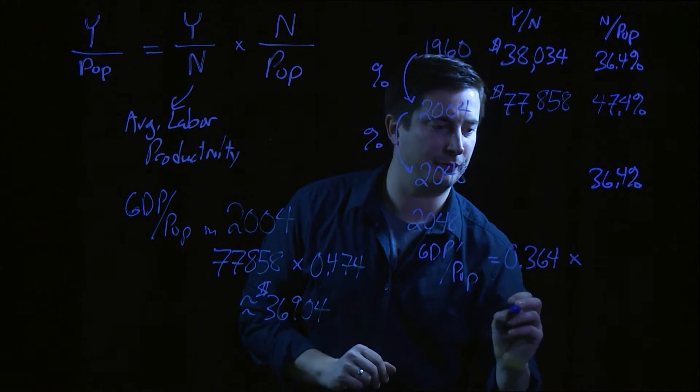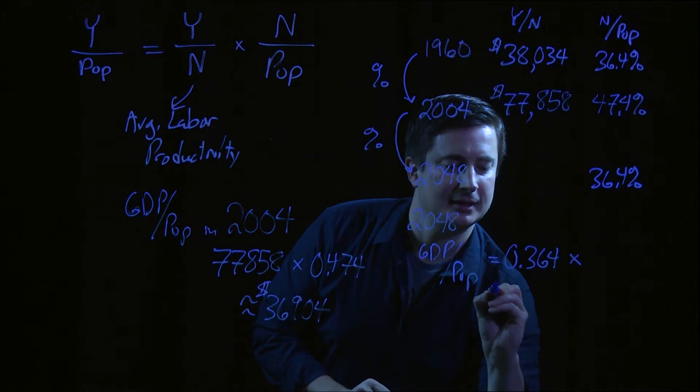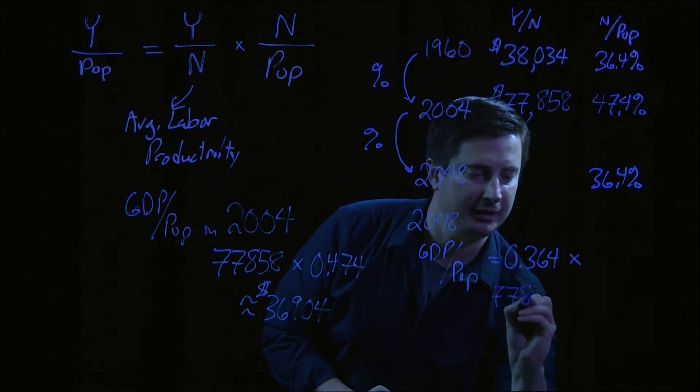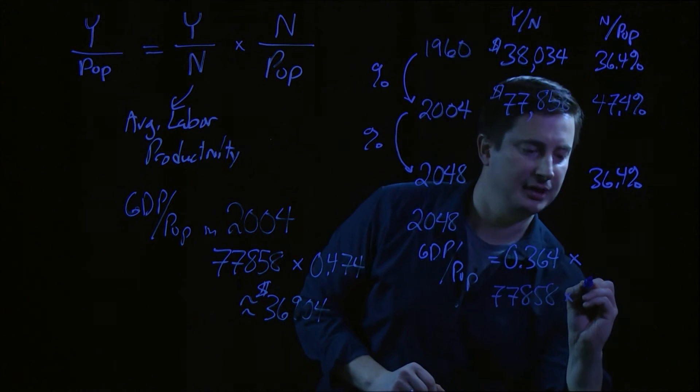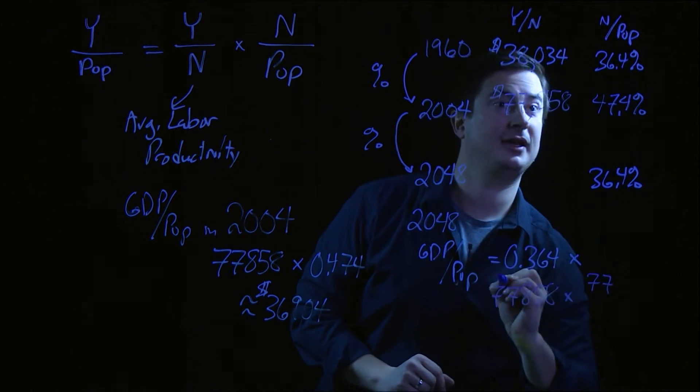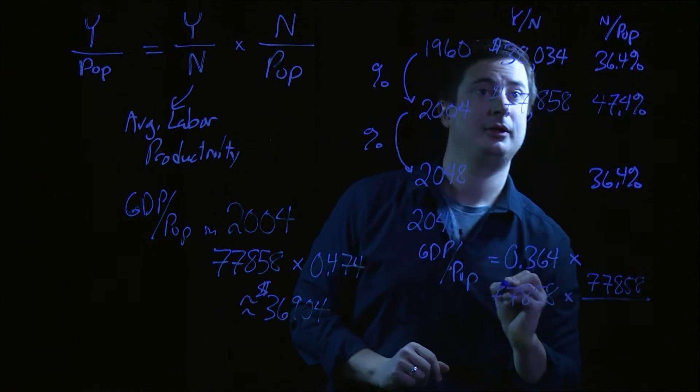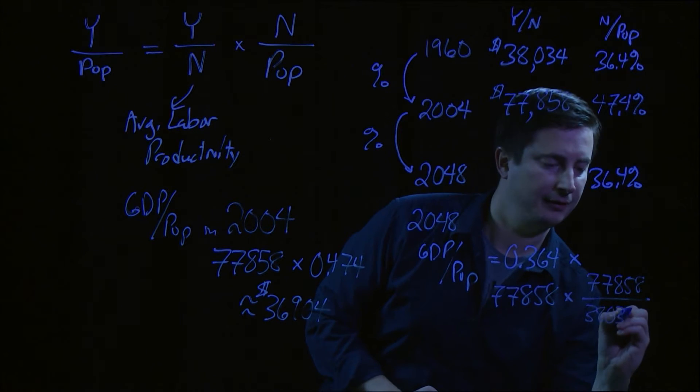So how is an easy way to write that down? Well, I'm going to work down here now. It's that initial level, 77,858 times. And an easy way to think about the percentage increase is just 77,858 over 38,034.